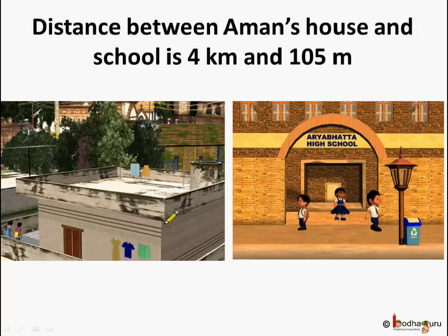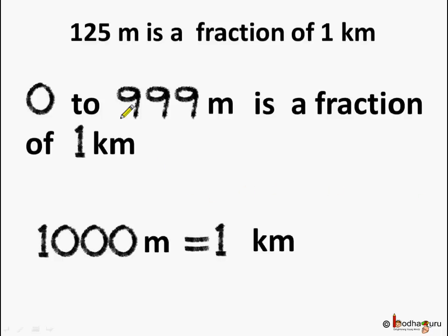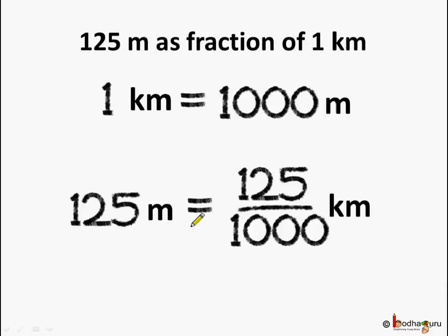Now suppose the distance between Amund's house and school is 4 kilometers and 105 meters. Let us convert this distance into a decimal number. Here, 125 meters is a fraction of 1 kilometer. Because any value between 0 to 999 meters is a fraction of 1 kilometer, and if it is 1000 meters, it can be converted to 1 kilometer. So we know 1 kilometer is equal to 1000 meters.